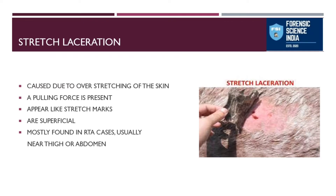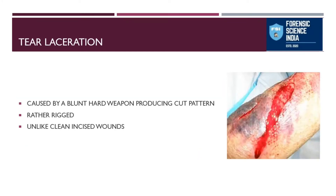Stretch lacerations are often found in RTA (road traffic accident) cases — whenever a vehicle has run over a person, they are very commonly found near the thigh or abdomen regions. These regions are soft, have underlying organs, and have high tensile strength skin that gets pulled, causing stretch mark-like formations.